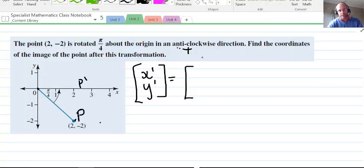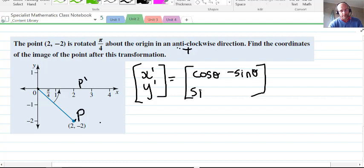To get x', y' in the image, we go cosθ, negative sinθ, sinθ, cosθ. The value of theta multiplied by the original coordinates. Theta in this case equals π/4, noting that explicitly. It's positive.